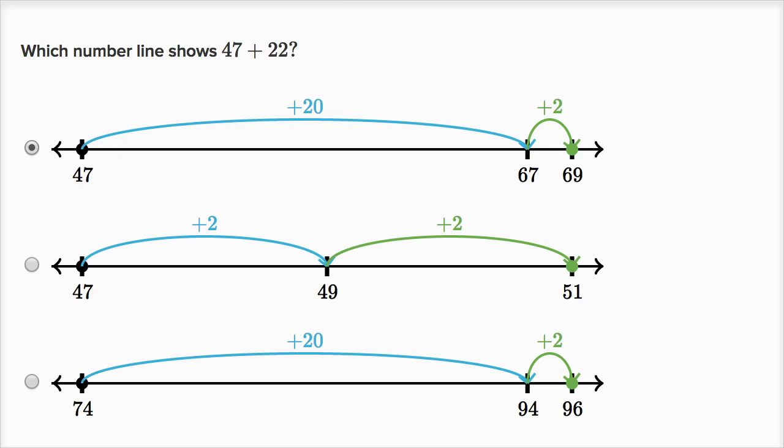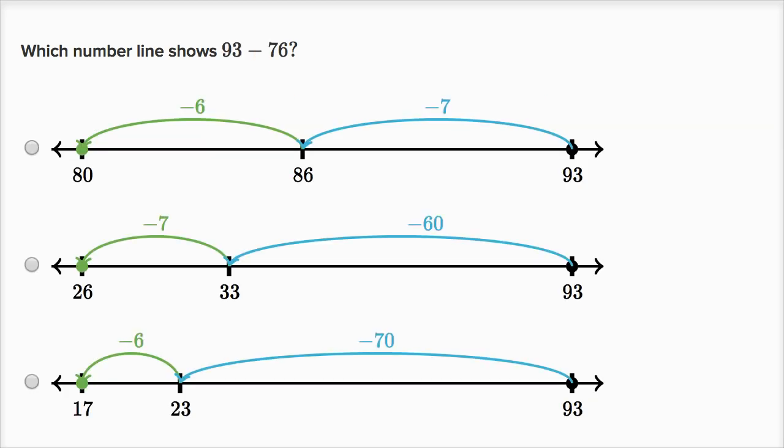Let's do a few more examples. Which number line shows 93 minus 76? So let's see, in all of these choices, we're starting at 93.